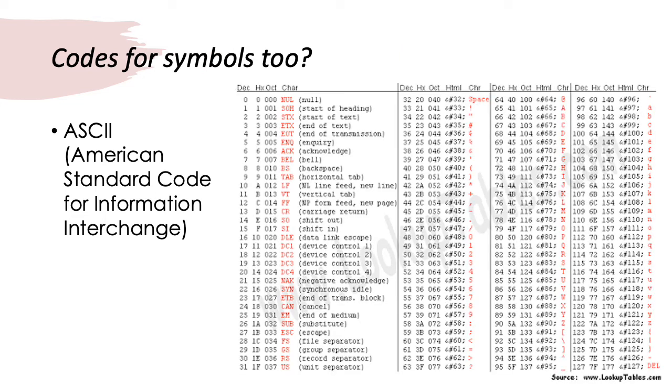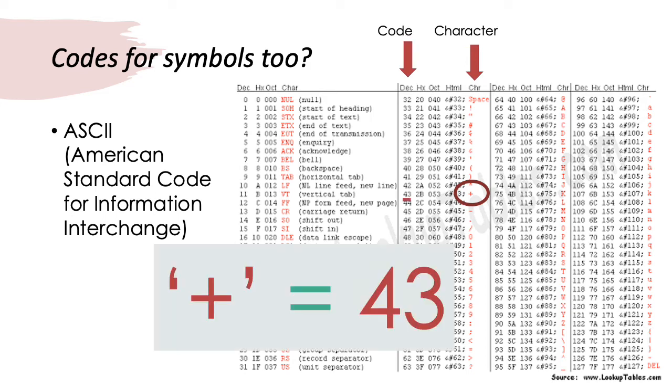We can also see in this ASCII table that there are symbols as well. Here in the middle column, we can find the plus symbol. The plus symbol is also a character. And in ASCII, the plus symbol is given the character code 43. So, the plus sign in ASCII is given the decimal value 43.